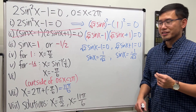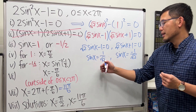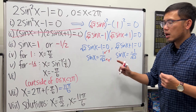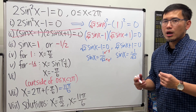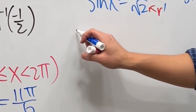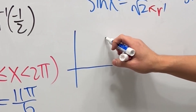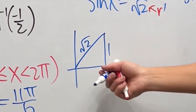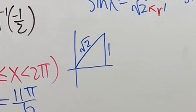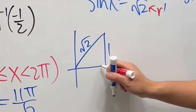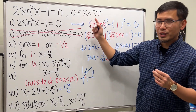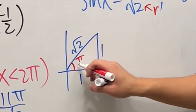Now how do we solve these? Sine can be located as y over r, where r is positive. For sine x equals 1 over square root of 2, we construct a reference triangle with y equal to 1 and r equal to square root of 2. This is the 45-45-90 special right triangle, so the other side is also 1. The angle is 45 degrees, or in radians, π over 4. That's the first answer.